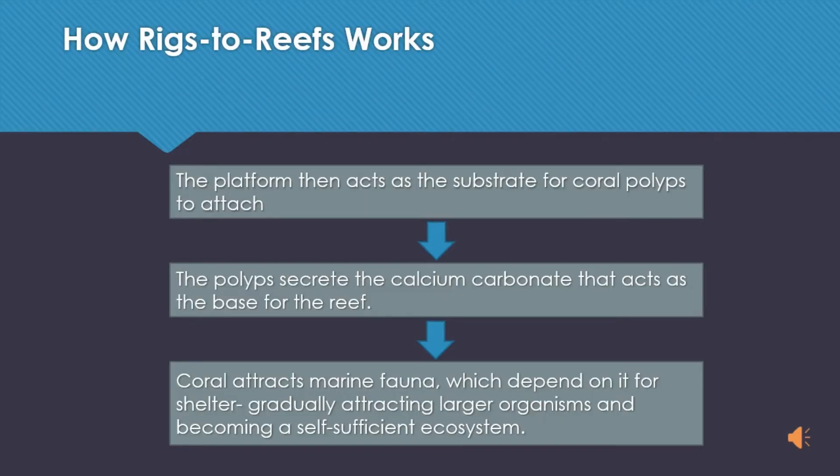We know that coral polyps secrete calcium carbonate, or limestone, that acts as a base for coral to grow. This coral can attract small marine fauna which depend on it for shelter. This attracts more and larger organisms, which forms a food web and thus a self-sustaining ecosystem.